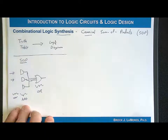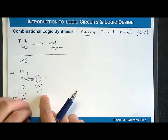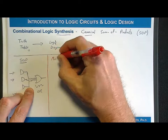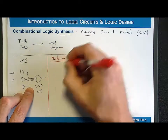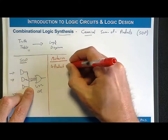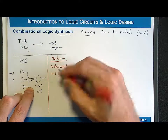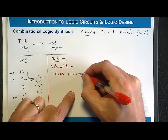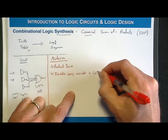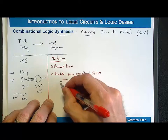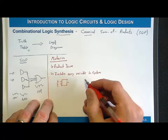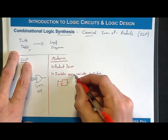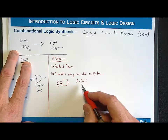What we want to do is look at how we can take a truth table and directly synthesize a logic diagram in this sum of products form. The way we're going to do that is using the concept of a min term. A min term has the following properties: it is a product term, and it includes every variable in the system.